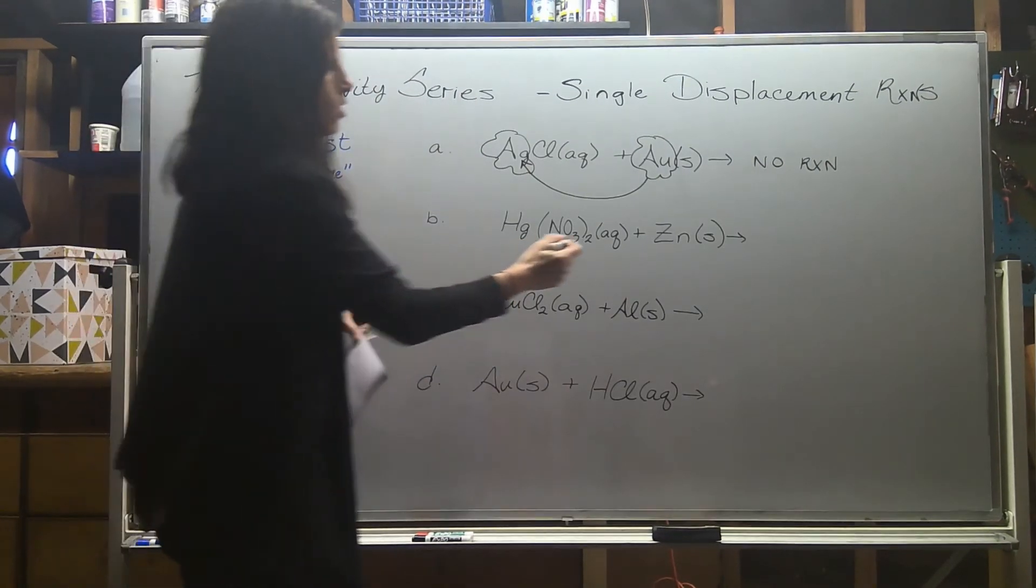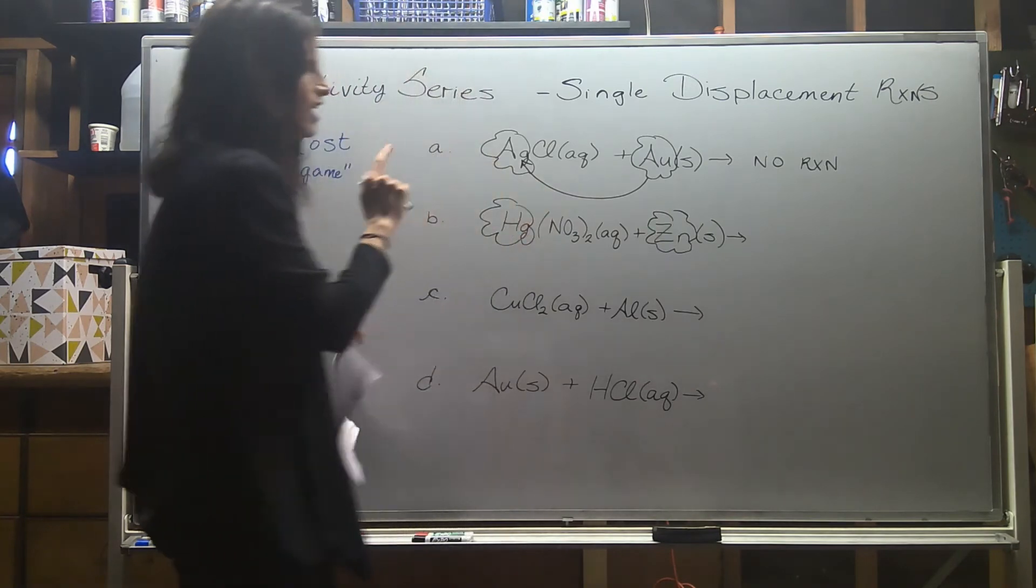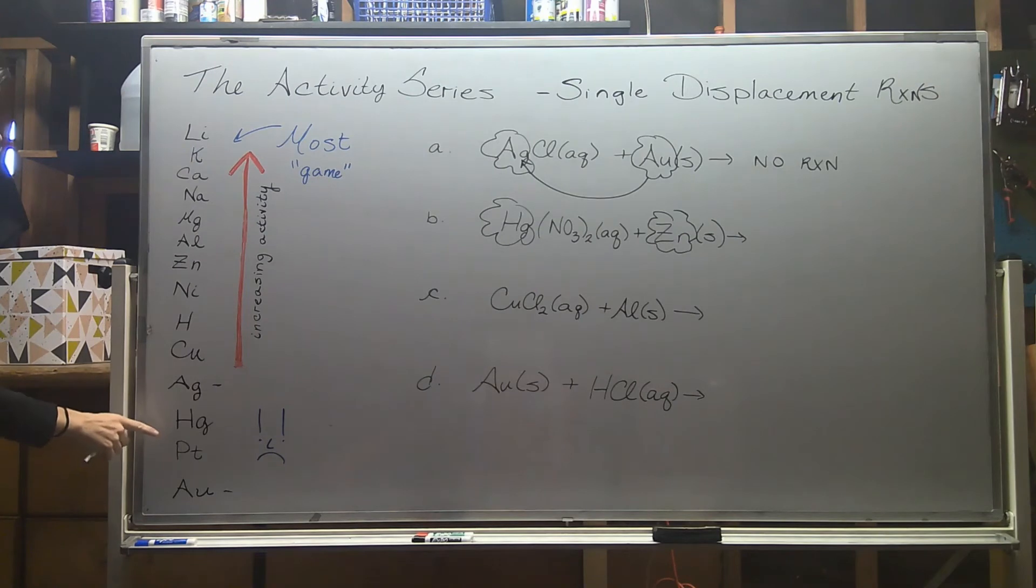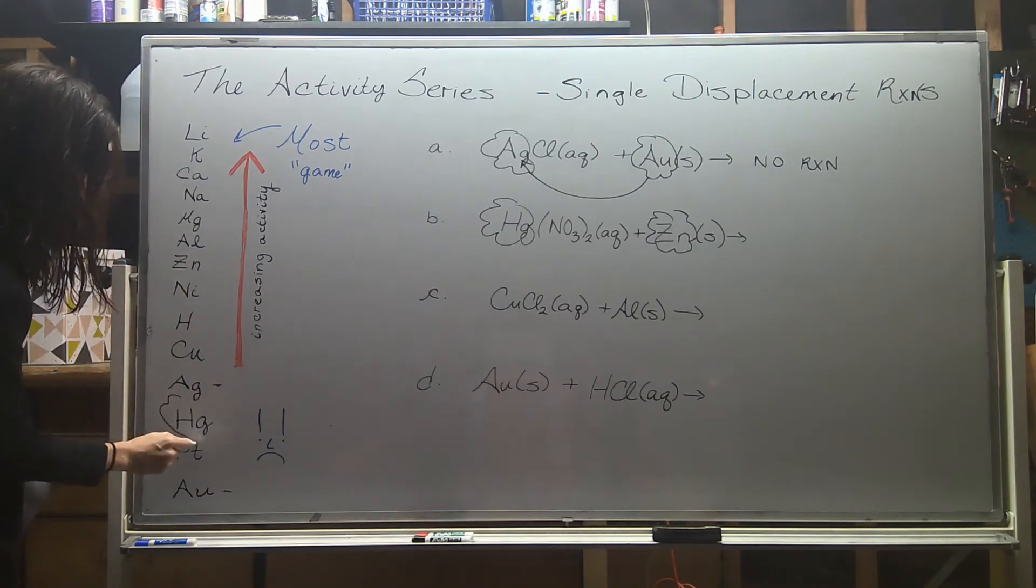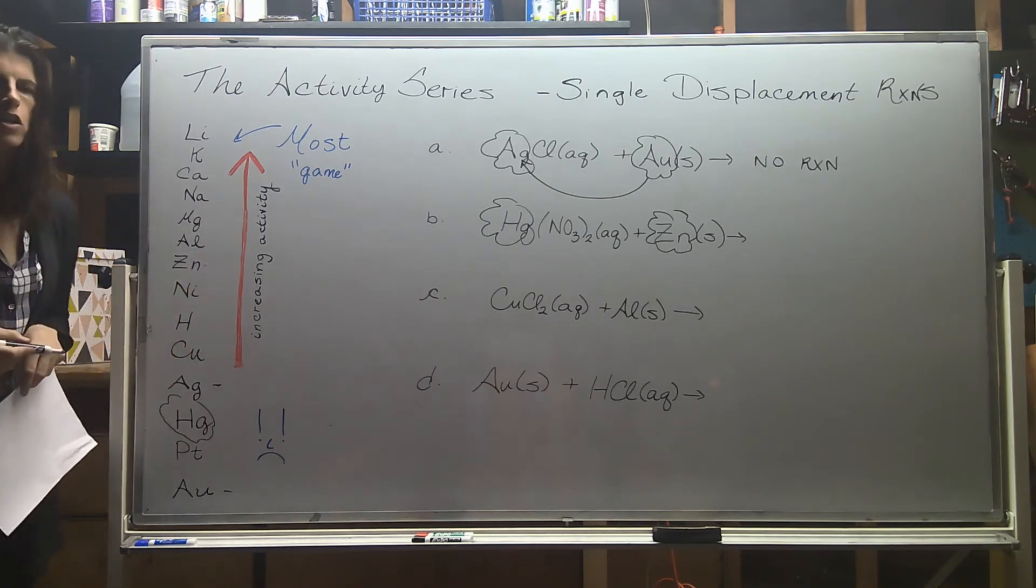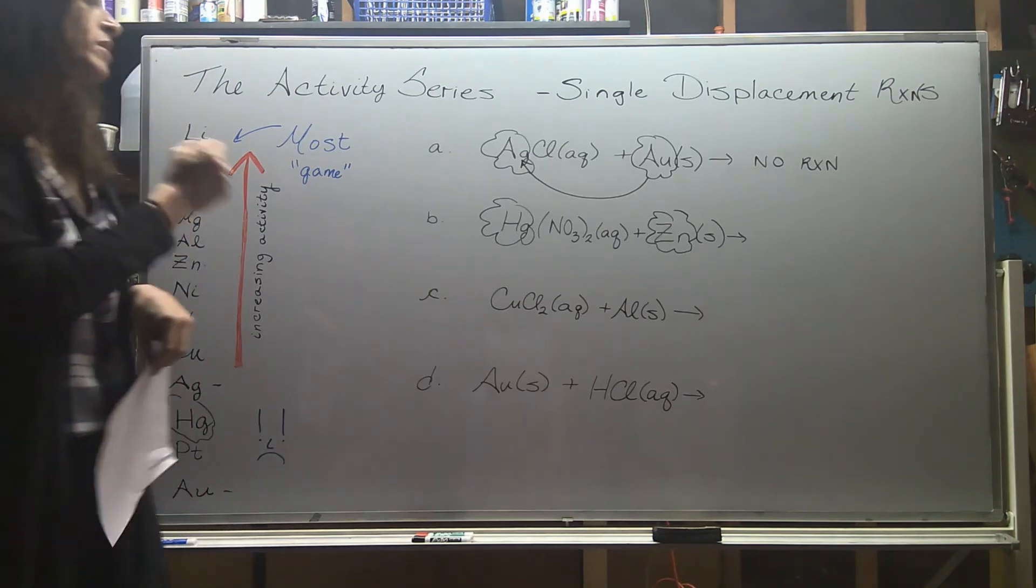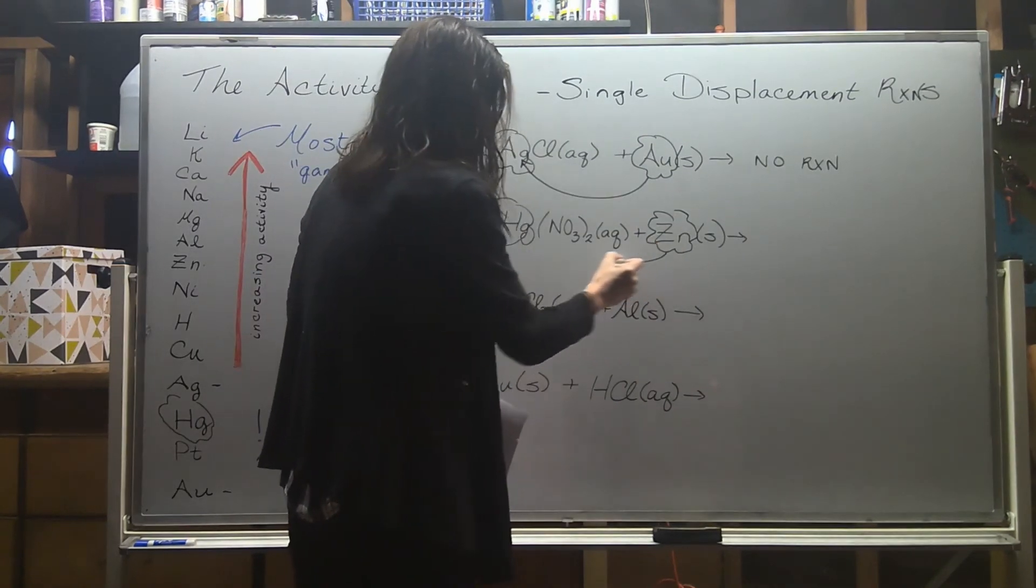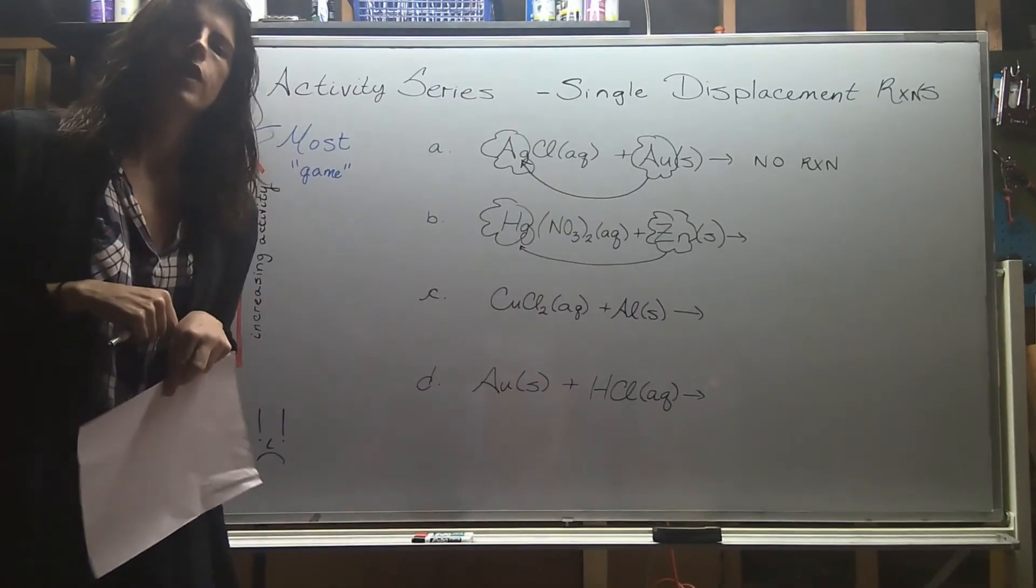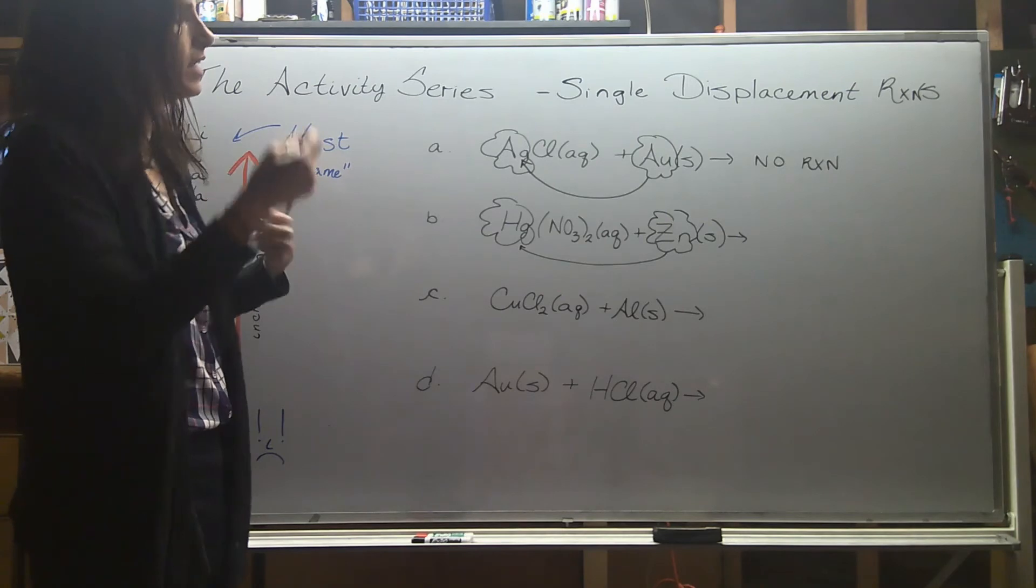On our second example, we're looking at zinc and mercury. Your table doesn't have mercury, but I looked it up and it would be between our silver and our platinum. So mercury is all the way down here, kind of on the low end of things. And zinc is much higher. So zinc has a lot more game. Zinc has a lot more activity than mercury, which means unfortunately for mercury, zinc can come in and kick mercury out of its relationship. So now we actually have a relationship and we need to, or a reaction and we need to analyze it.